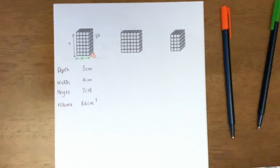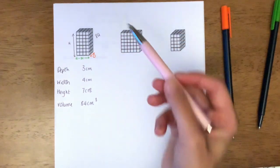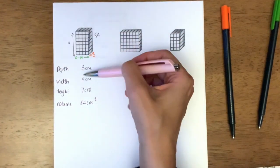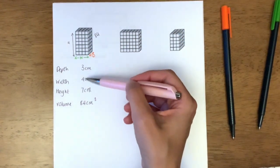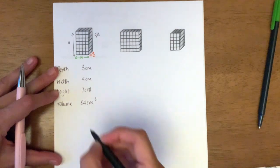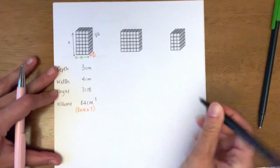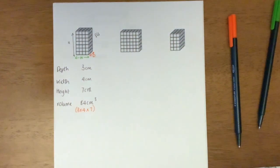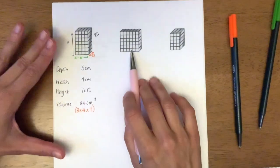So how would we get to the answer of 84? I counted that there were 12 on top. To get 12, I do three times four - three fours are 12. Then I multiplied it by seven because there were seven layers, which gives me 84. The calculation you need to work out the volume is to multiply those three numbers together: three times four times seven. To work out the volume of a cuboid, you multiply the three dimensions together.